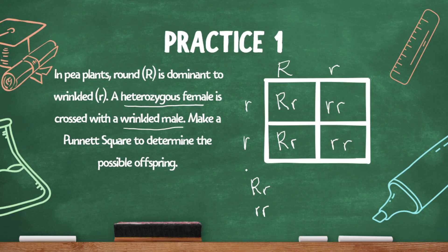The phenotype — what they look like — the big R, little r offspring will be round because it has one dominant allele, so that's going to be expressed. And the little r, little r offspring will be wrinkled. So half of the offspring would be round and half would be wrinkled.